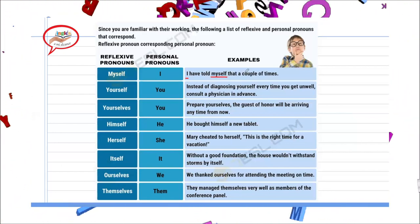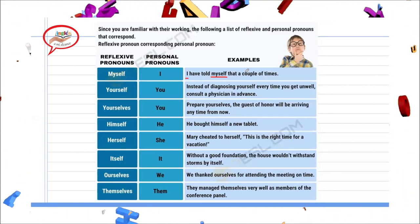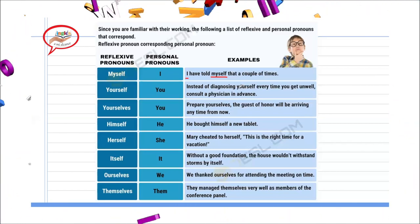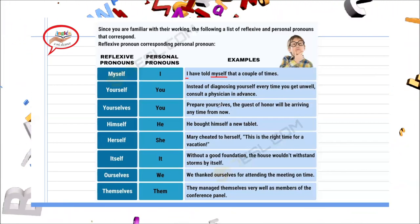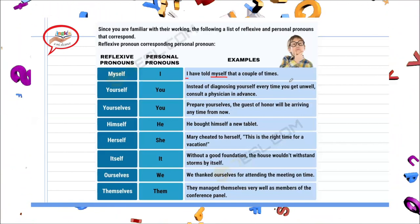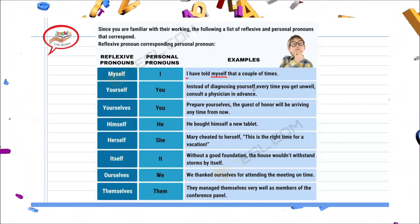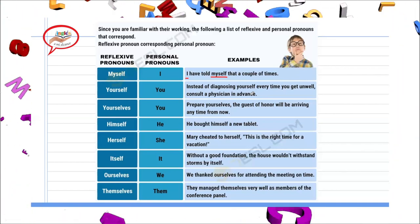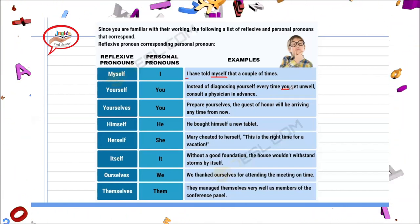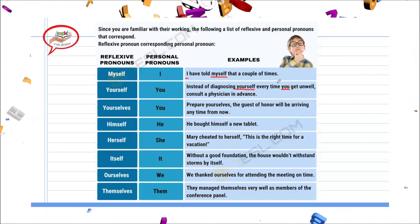Aquí hay dos palabras muy importantes: mi personal pronoun es I, entonces cuando veo I y me piden un reflexive pronoun, ya sé que voy a escribir myself. Con I hay una palabra dada, no hay cambio. El siguiente reflexive pronoun es yourself: 'Instead of diagnosing yourself every time you get unwell, consult a physician in advance.' La palabra clave es you, y de eso depende yourself — porque you me lleva a yourself.